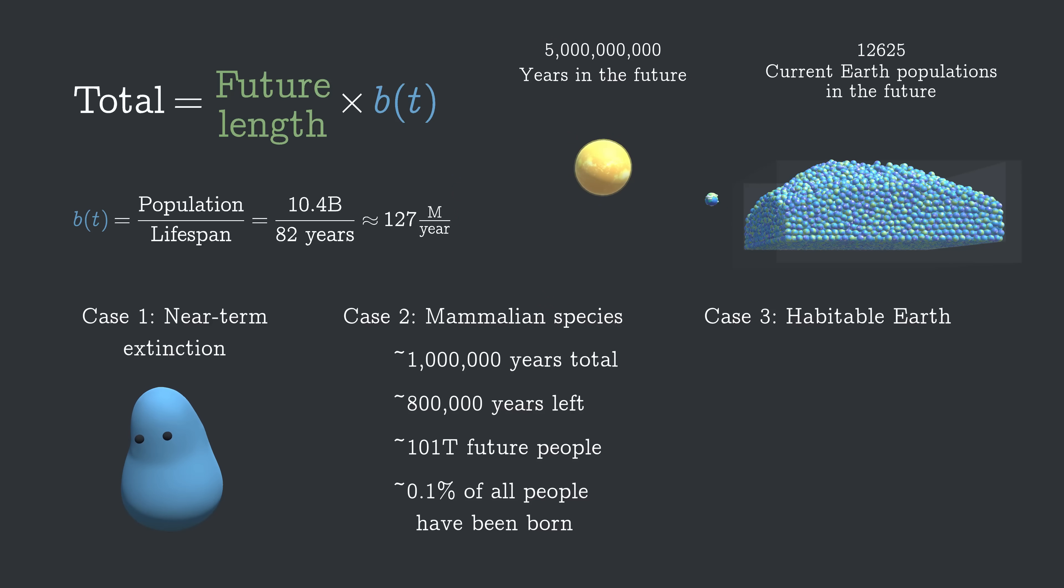Astronomers estimate that in about 1 billion years, the Sun will be bright enough to boil the oceans. Maybe we could manage that somehow, but it seems fair enough to assume that's the end of life on Earth.